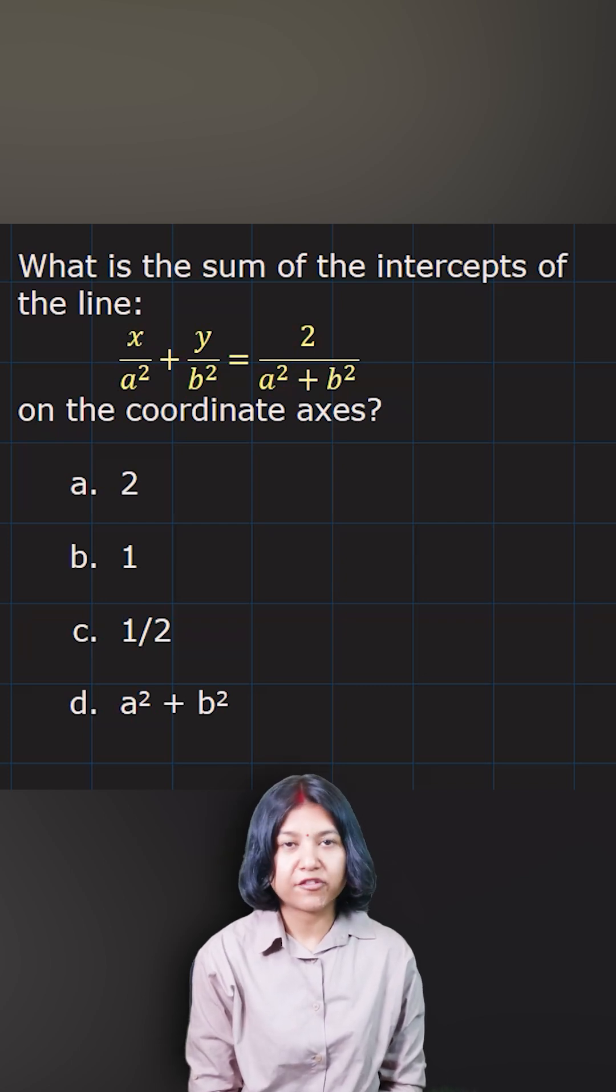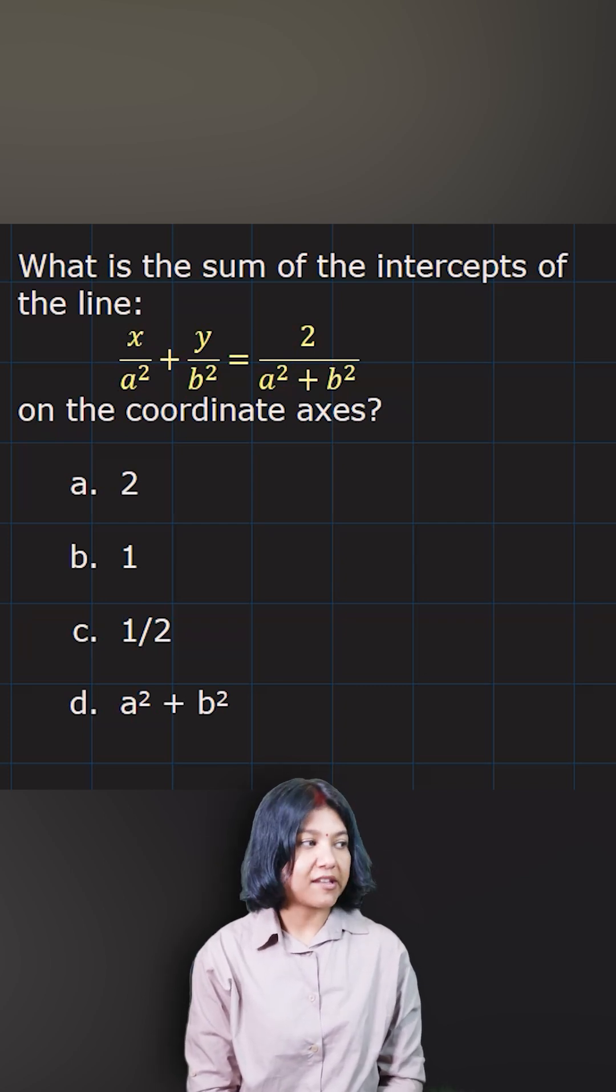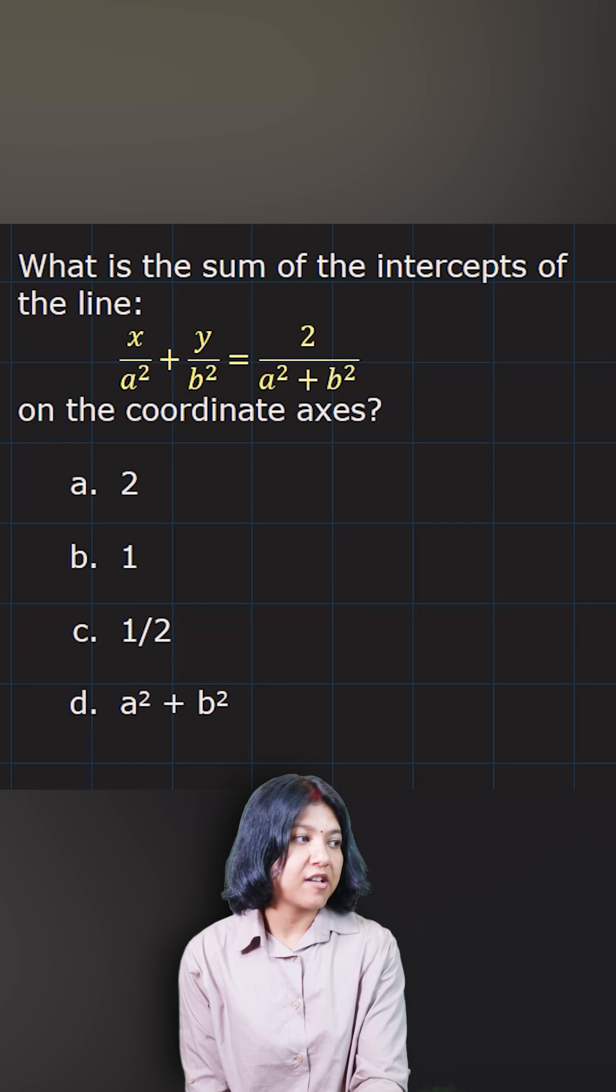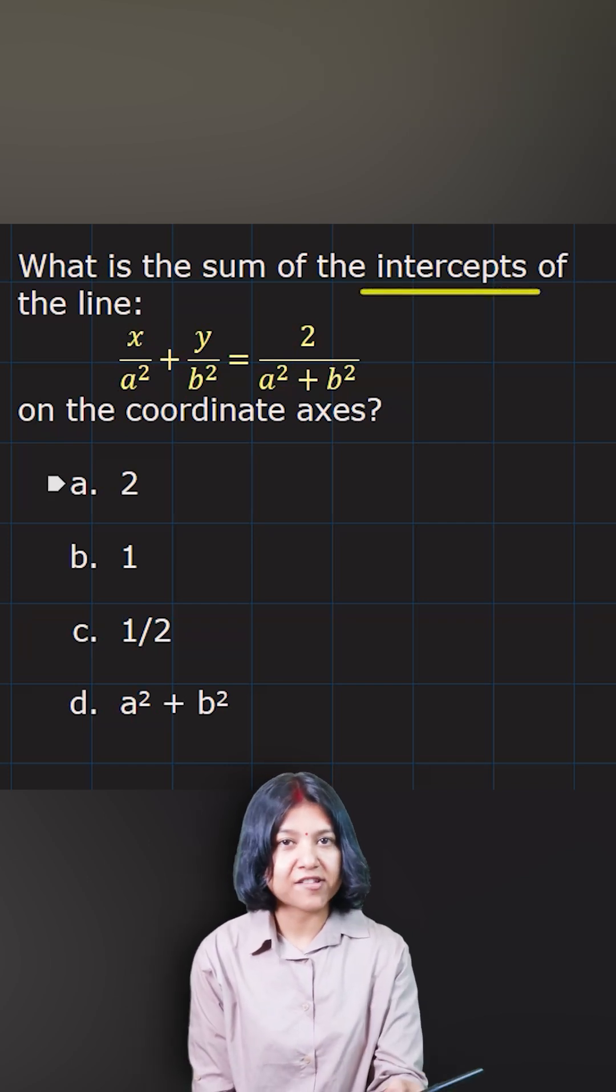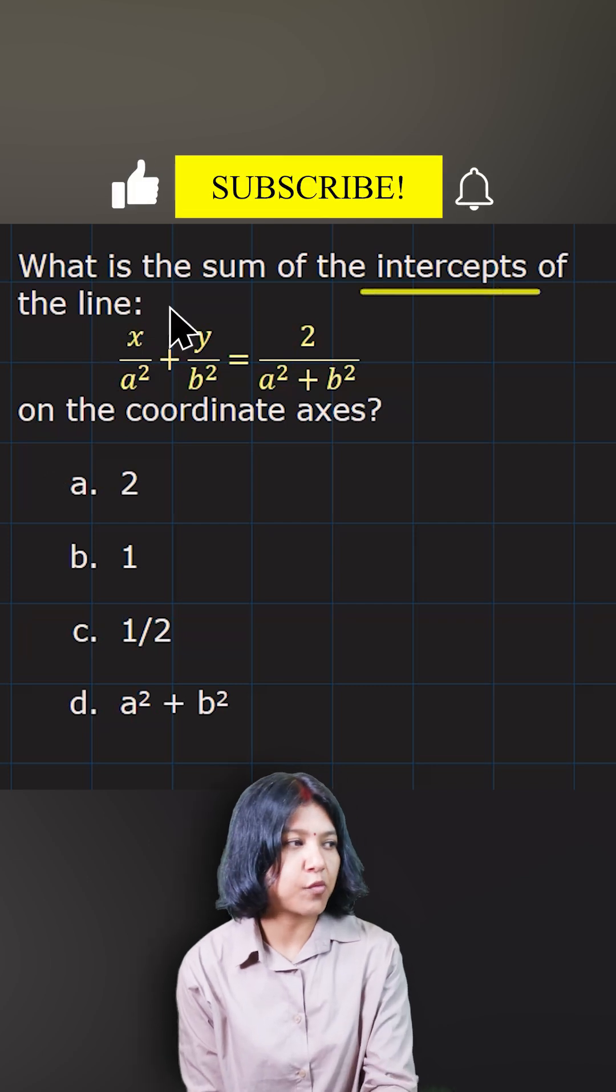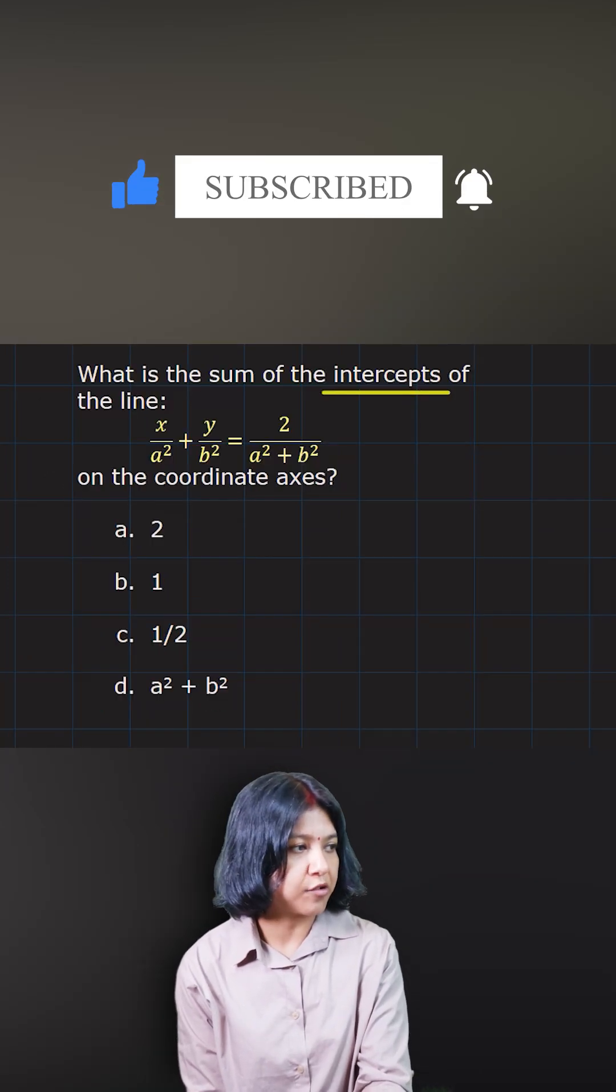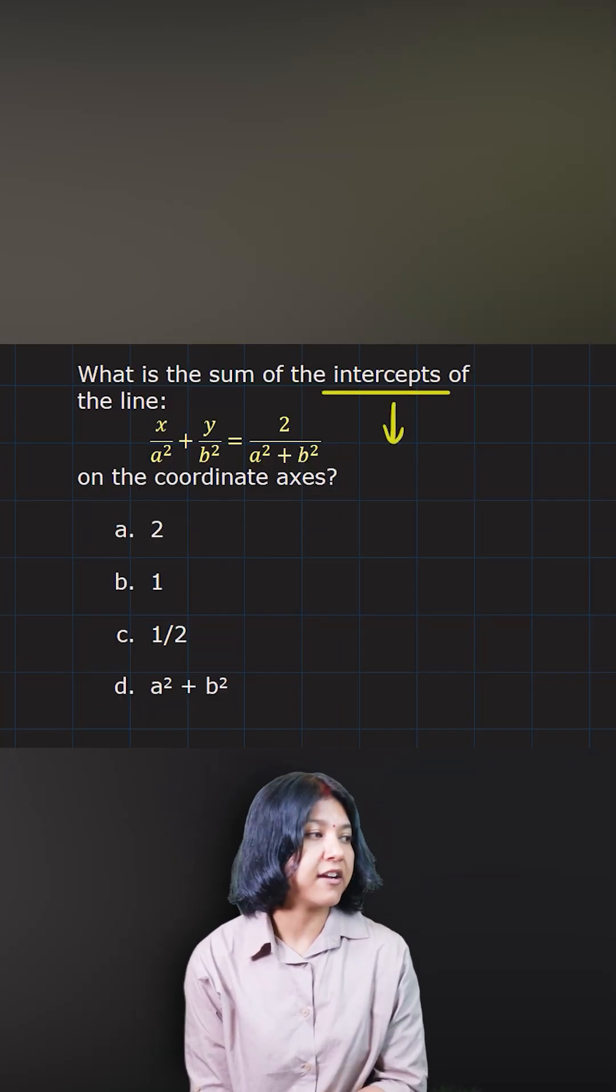This question wants you to find the sum of intercepts for the given line. To find the intercepts, you just have to plug in the opposite coordinate as zero because at the x-intercept, y value is zero, and likewise for the y-intercept, x value is zero. So let's do that turn-wise, but we'll be very quick.